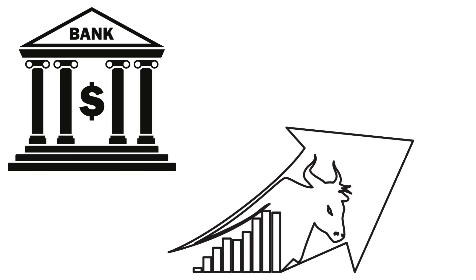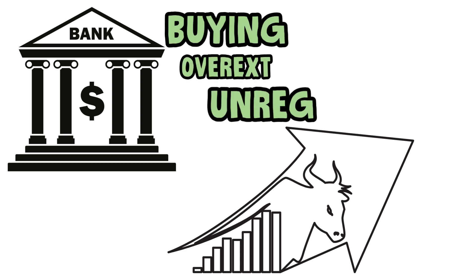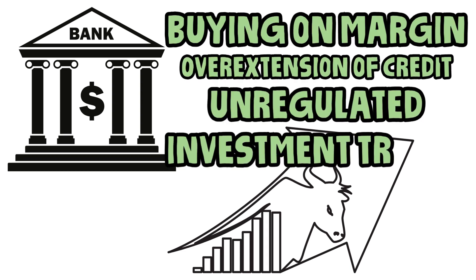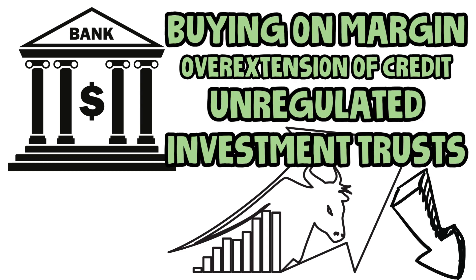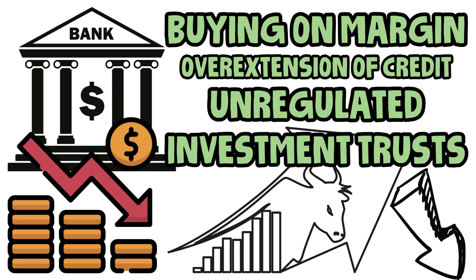Banks played a significant role in the crash. They were heavily invested in the stock market and engaged in risky lending practices. When the market began to decline, banks faced severe losses, triggering a wave of bank failures.